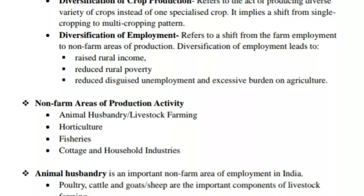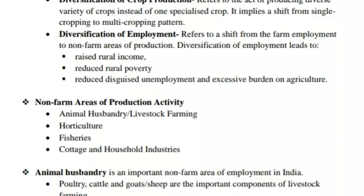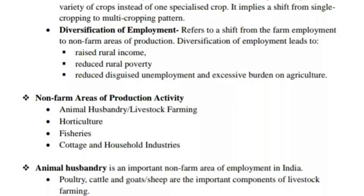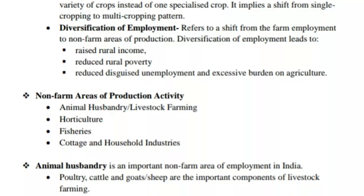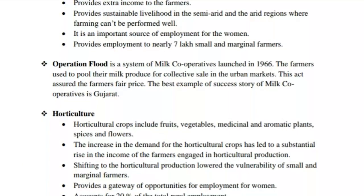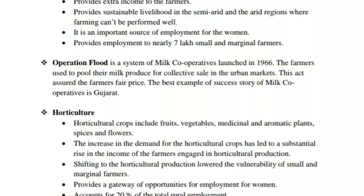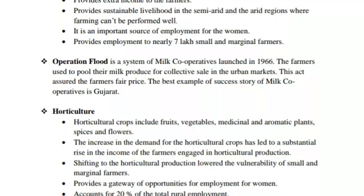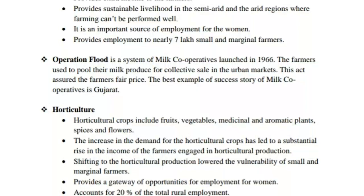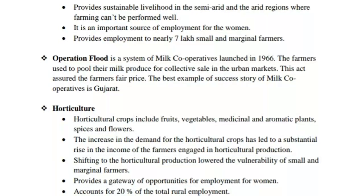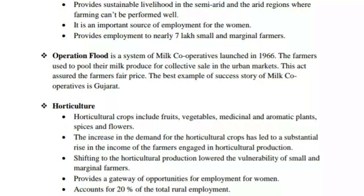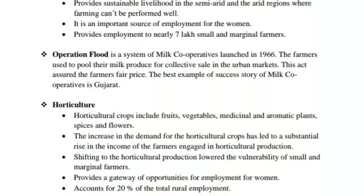Animal husbandry is an important non-farm area of employment in India. Poultry, cattle, goats, and sheep are the important components of livestock farming. It provides extra income to farmers, provides sustainable livelihood in semi-arid and arid regions where farming cannot be performed well, and is an important source of employment for women. It provides employment to nearly 7 lakh small and marginal farmers.